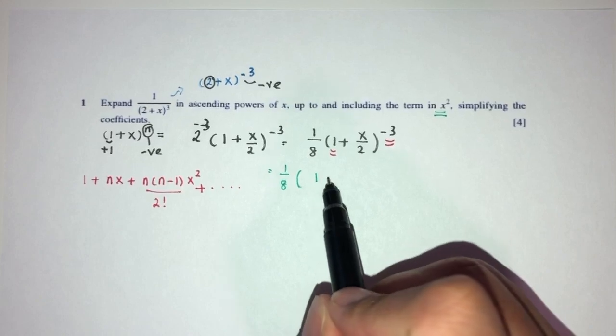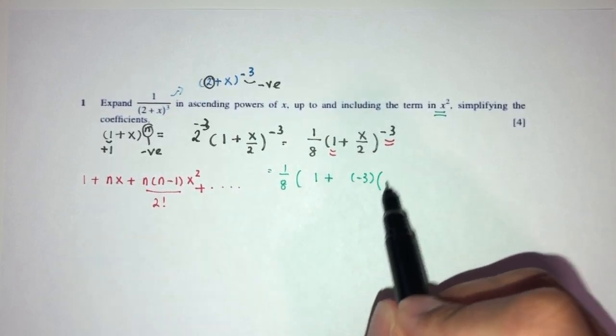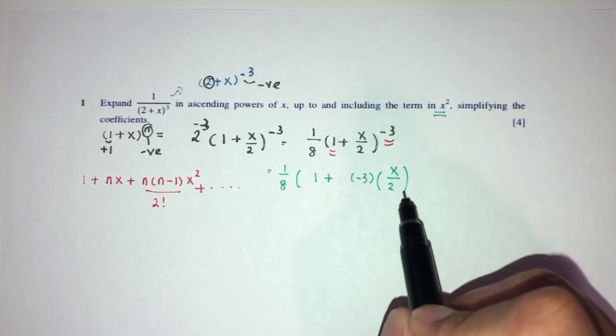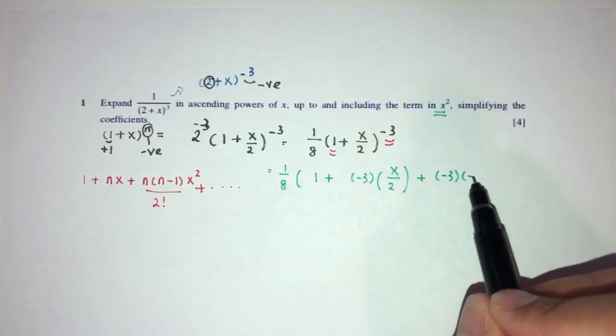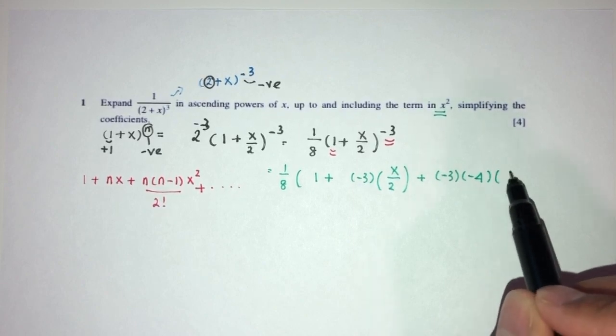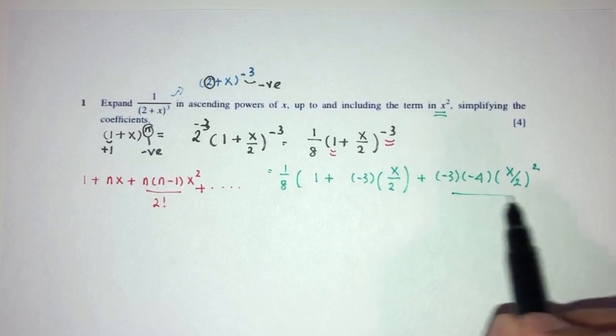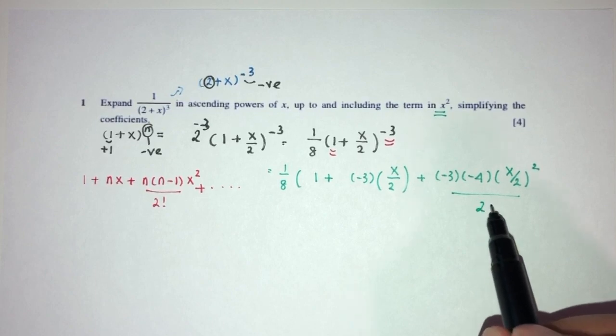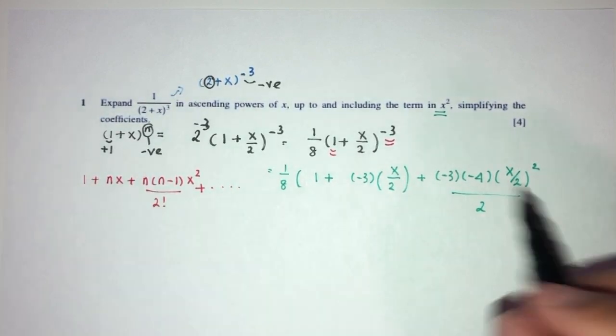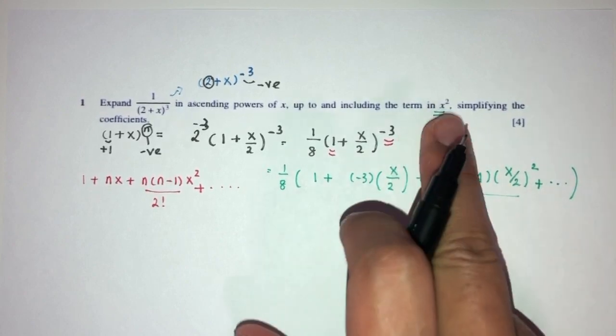And this will give you 1 plus n is minus 3. x is x over 2, and this one will be minus 3 times minus 4 times x over 2 squared, over 2 factorial. So here we have 2 factorial, which is 2, plus, but we don't need more than this because we only care about x squared.